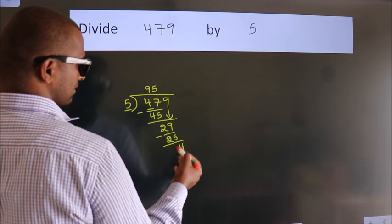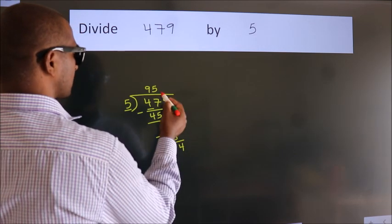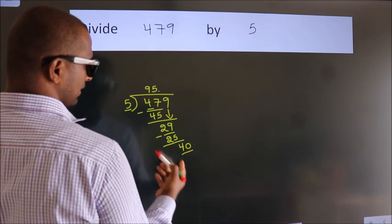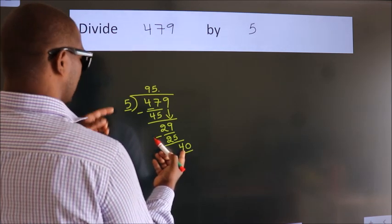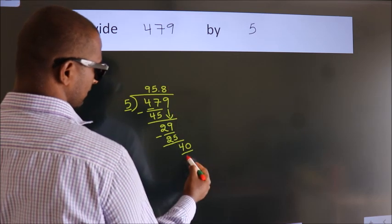After this, no more numbers to bring down. So what we do is, we put a dot and take 0. So 40. When do we get 40? In the 5 table, 5 eights, 40.